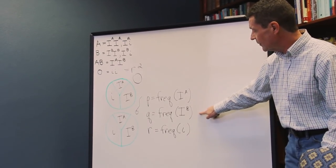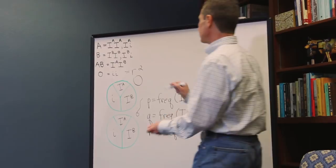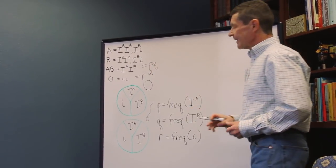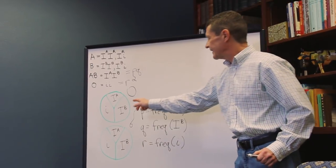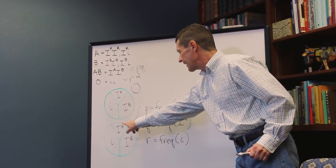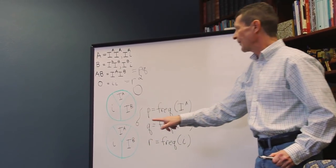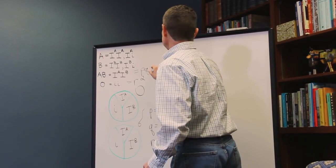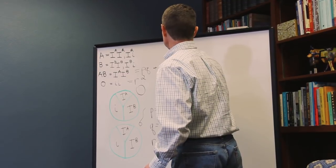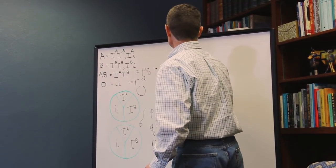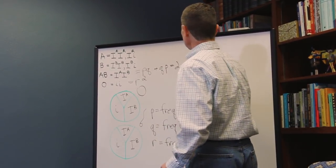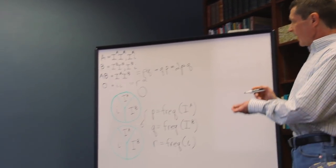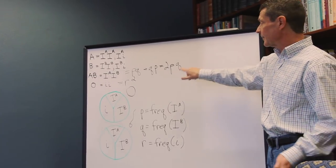But I can get it another way. I can take an IA egg and an IB sperm. That's QP or the same as PQ. So, that is 2PQ. So, that looks familiar, at least, from the Hardy-Weinberg.